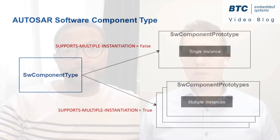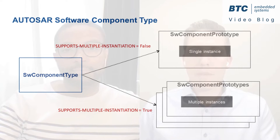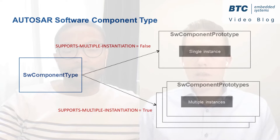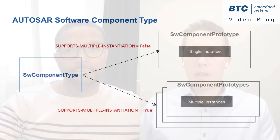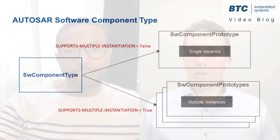Hi Nabil. Indeed, AUTOSAR is an architecture standard and offers several options to define calibrations. Let's take this from the angle of the software components. We commonly use the term AUTOSAR software component, but the right expression is software component type, because a software component type can be instantiated once or multiple times. Considering this, AUTOSAR offers three options to define the calibration parameters.